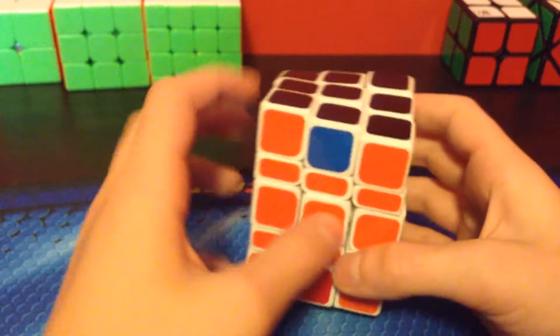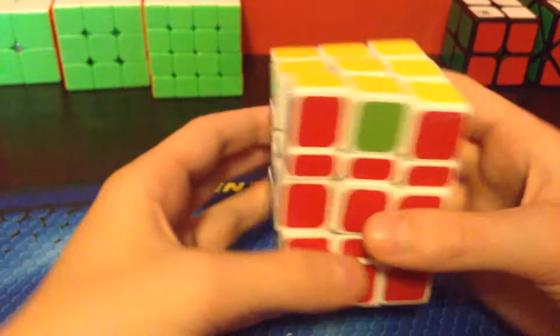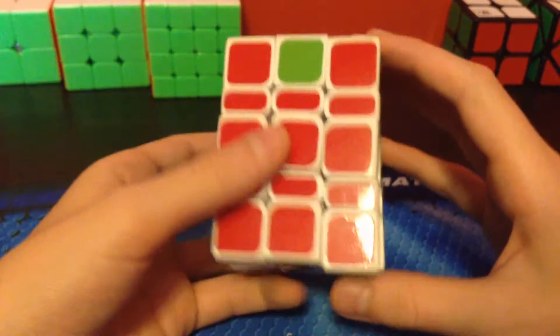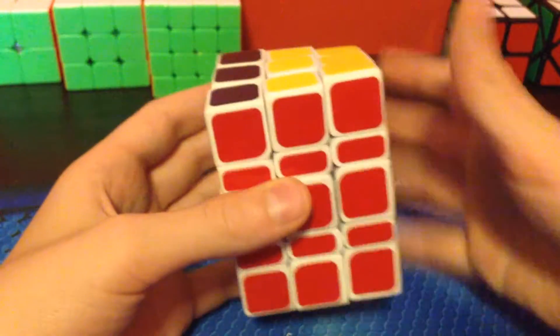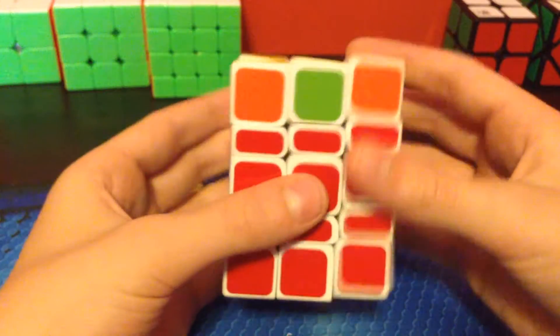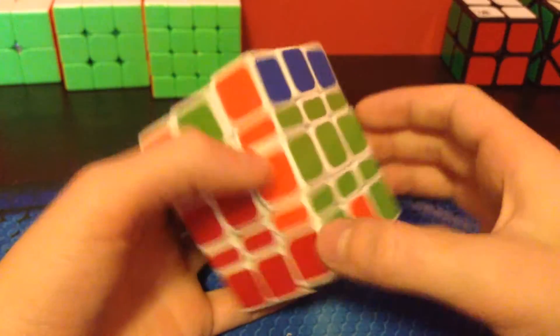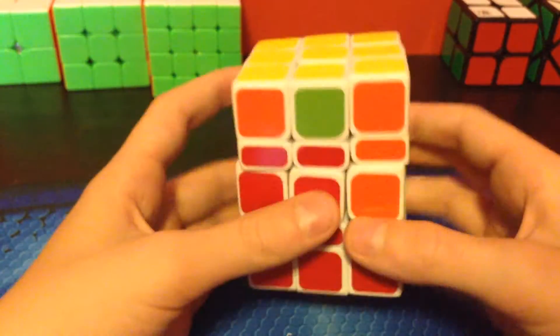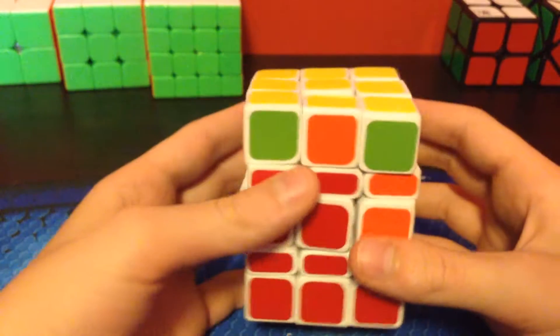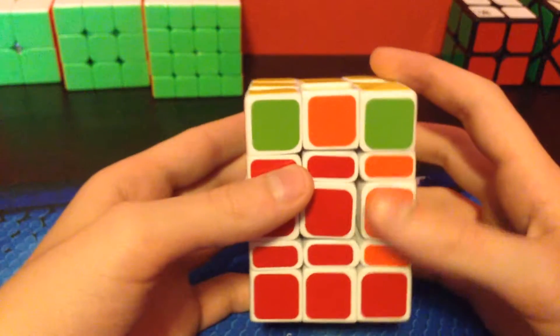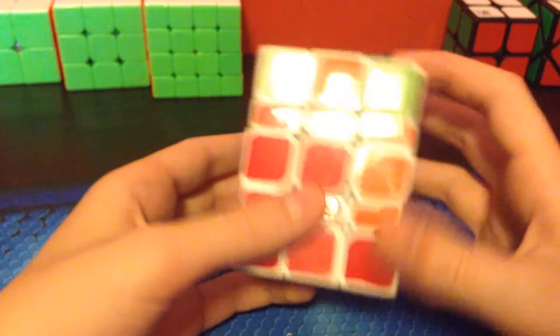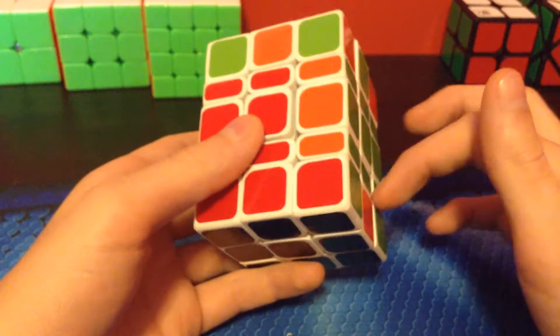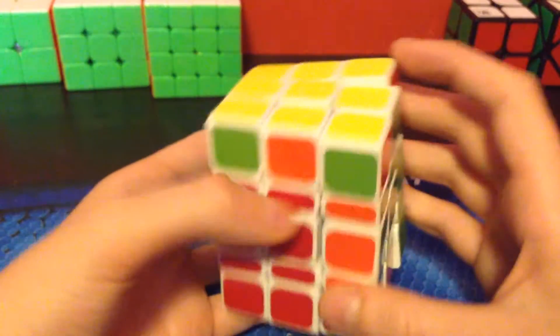So, the way I solve edges is I just do this algorithm, R2, U2, R2, U2, R2, and it flips this whole chunk, except that's fine, because you always do it an even number of times, so it won't, like, so it'll always be, end up getting solved again.